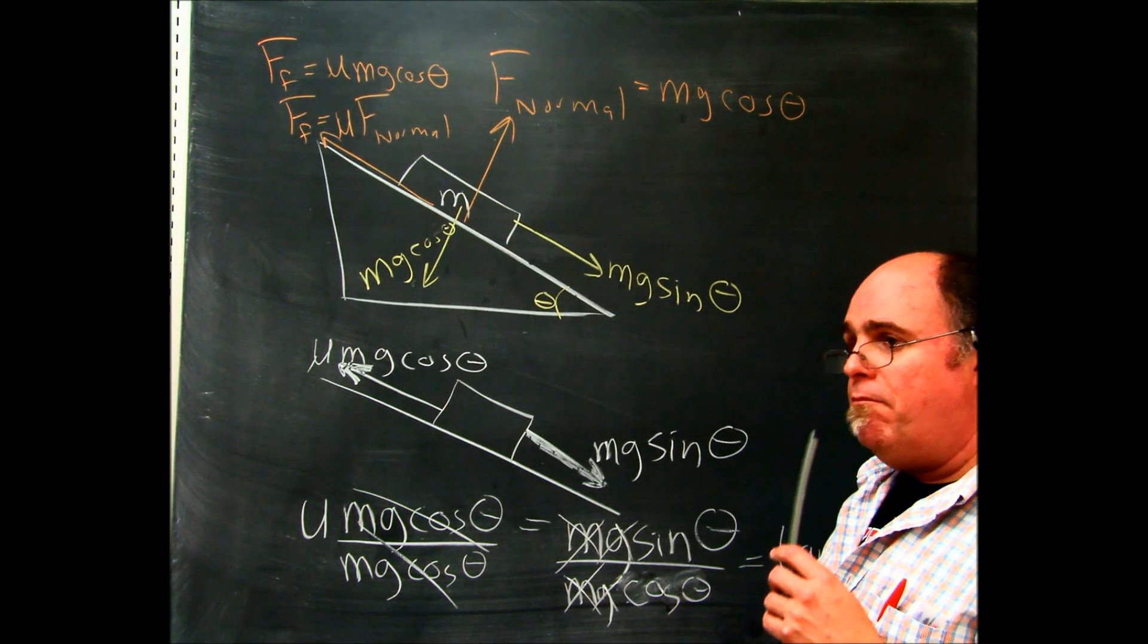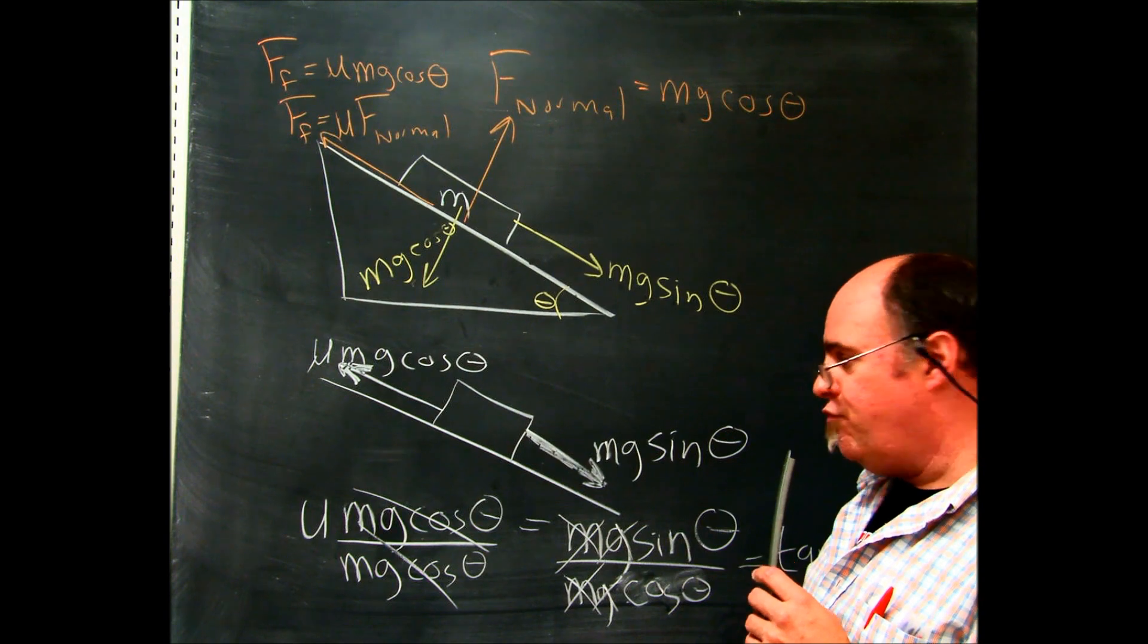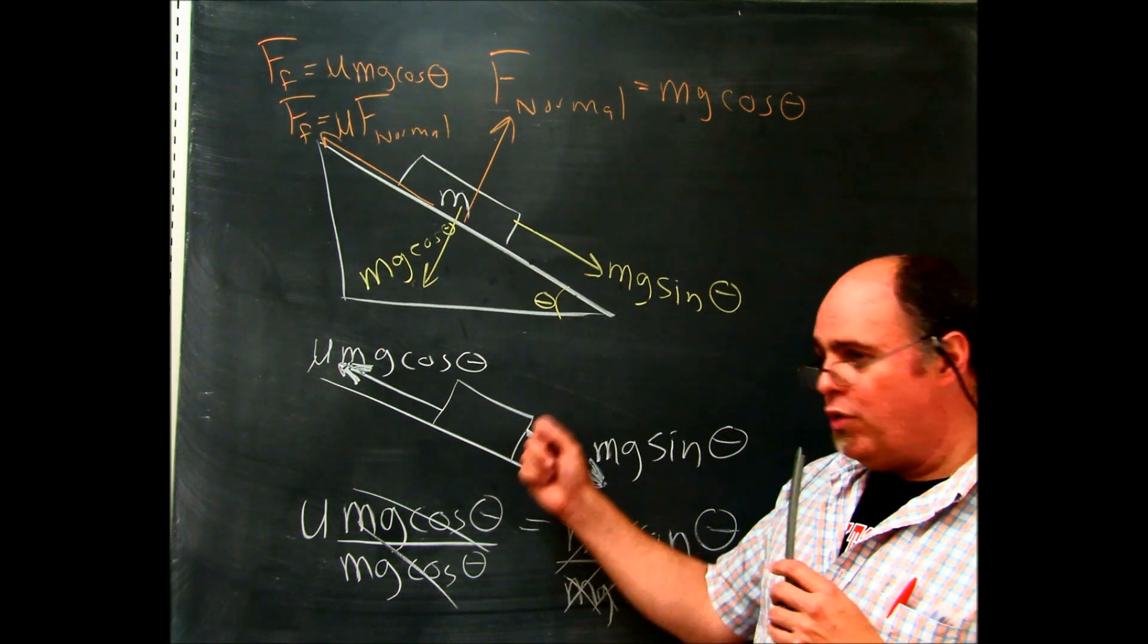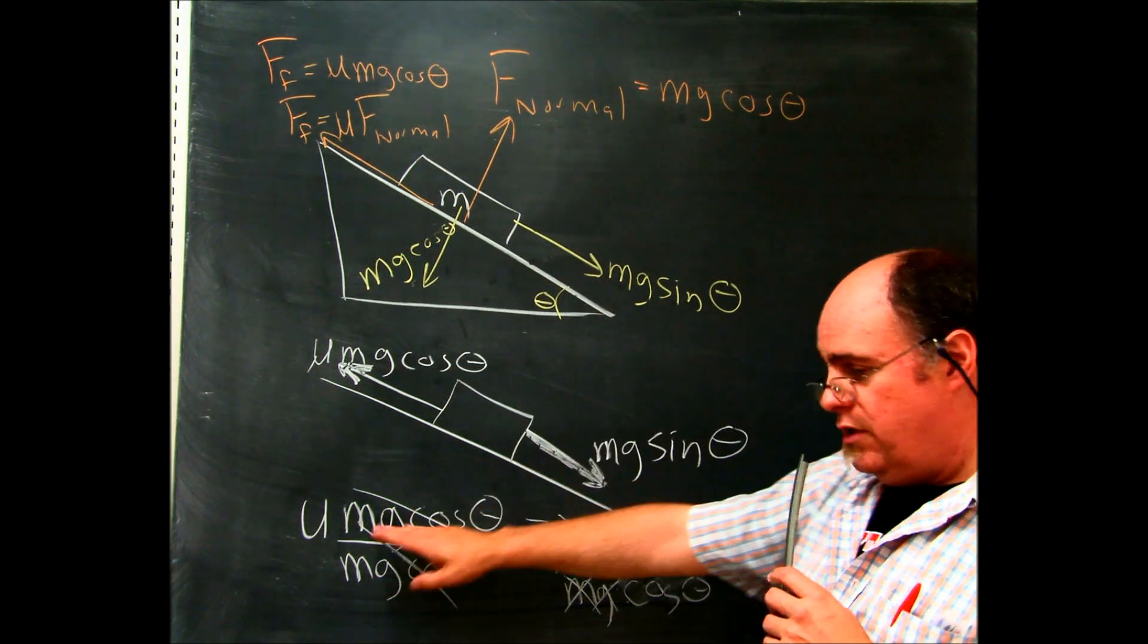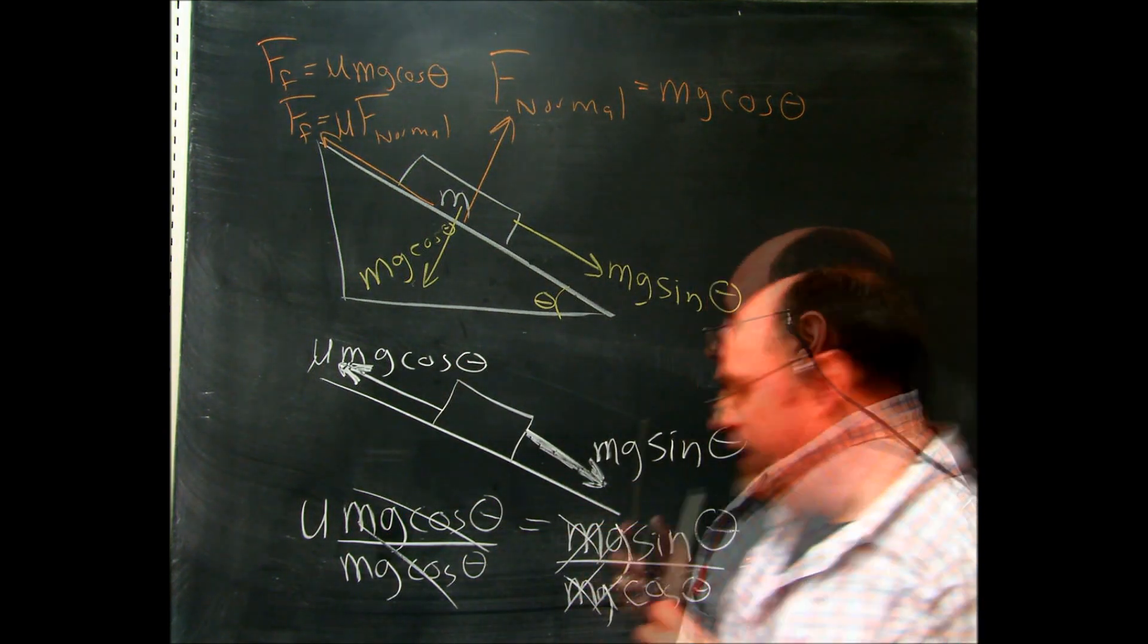So you were studying the maximum coefficient of static friction. So you lifted up the ramp until you just broke it free. So the moment before you broke it free, this was equal to this, and this piece became this piece.